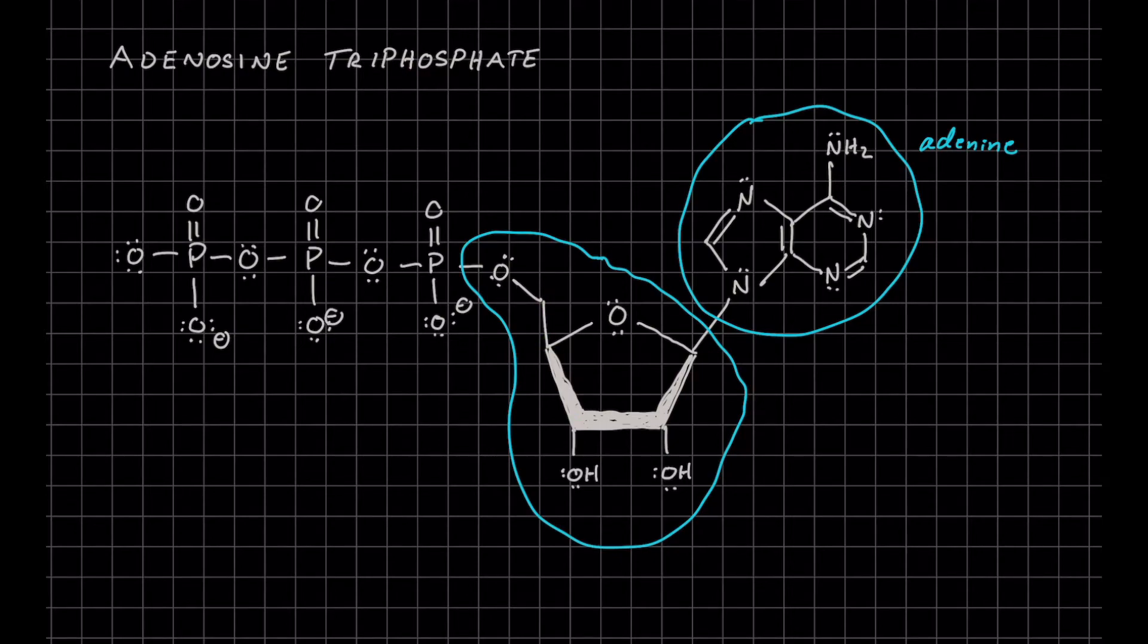This two-prime carbon is usually deoxygenated when we look at something like deoxyribonucleic acid or DNA, but in ATP it's going to be retained, so keep that in mind.